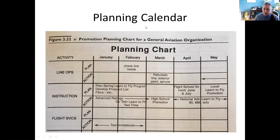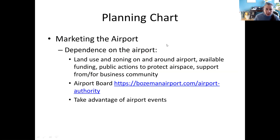We'll also be taking a look at a planning calendar. Are you going to have some events, or are there going to be events at your airport that you can tie into? Are you working with a school where certain events can also be promoted as part of your marketing? If you're on an airfield, you are dependent on what's going on at that airport — land use and zoning in and around the airport, available funding, public actions to protect airspace, support from and for the business community. You need to be aware of what's going on at that airport. There are positive things too — available funding that may help with something you're doing — and you can tie into airport events or know that certain events are not going to tie into your business and plan accordingly.